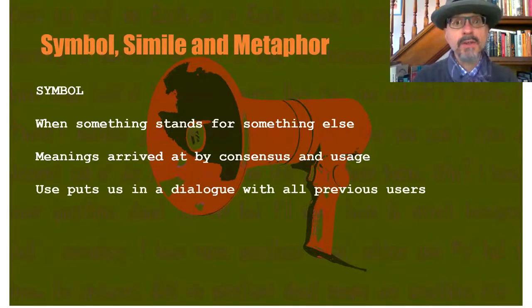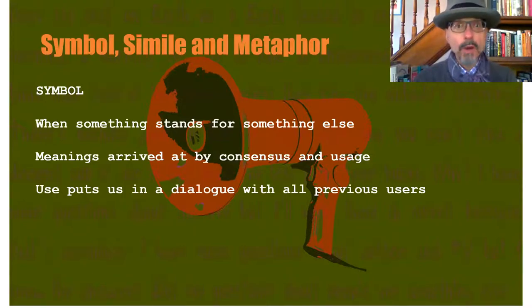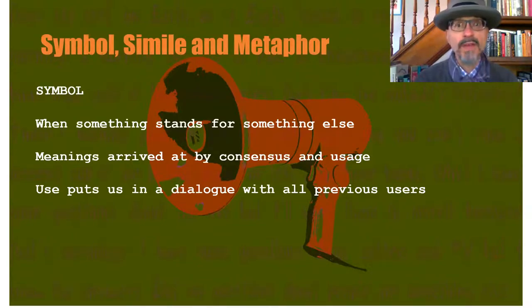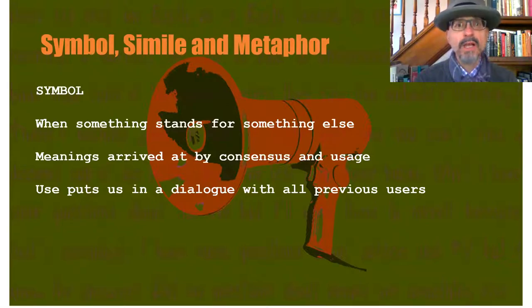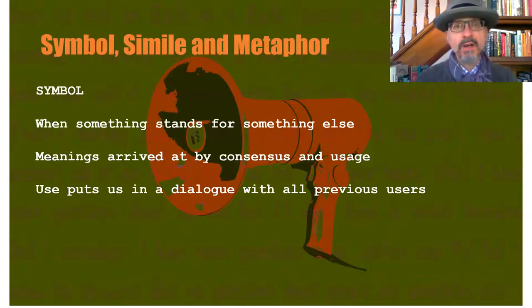One of the interesting things about symbols is how the use of a symbol puts us in a dialogue with all previous users. A classic example would be the image of the rose and what it stands for in terms of love. That takes us at least as far back as Renaissance writers — Thomas Campion, Shakespeare, and people of that generation — and perhaps even back to courtly love in the 13th century. We don't get too many uses of it in Roman and Greek poetry, so it's probably a later European invention, but it just keeps on going through ballads, through higher echelon poetry, all over the place.